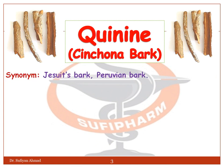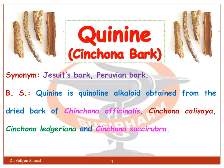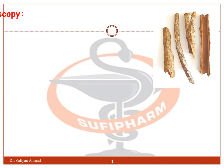Cinchona bark is also known as Jesuit bark and Peruvian bark. The biological source: quinine is obtained from the dried bark of Cinchona officinalis, Cinchona calisaya, Cinchona ledgeriana, and Cinchona succirubra, belonging to family Rubiaceae.